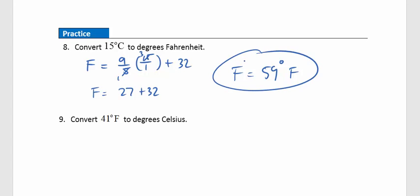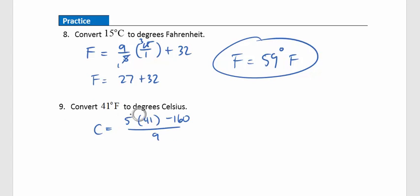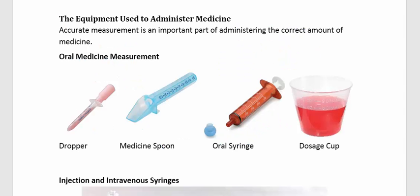Practice question 9: Convert 41 degrees Fahrenheit to Celsius. Substituting 41 into the formula C = 5(F − 160)/9 and following order of operations: 5 times 41 minus 160, then divide by 9, gives us 5 degrees Celsius.